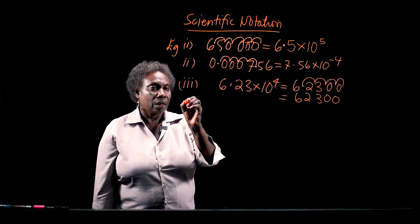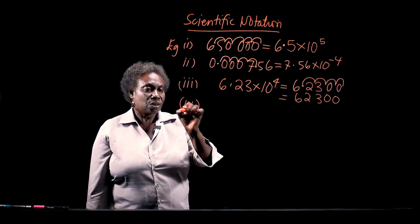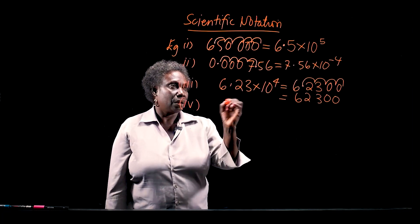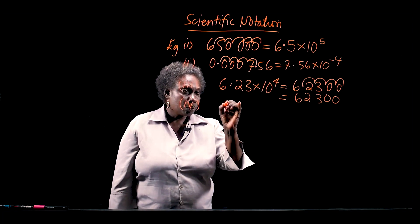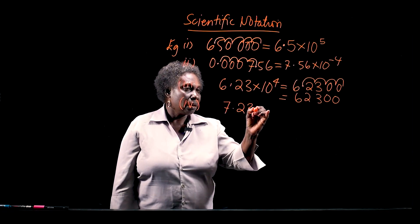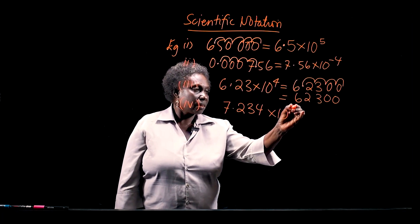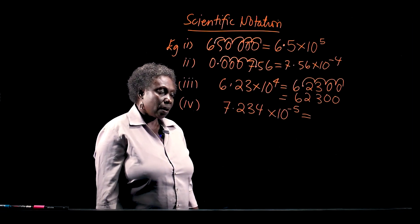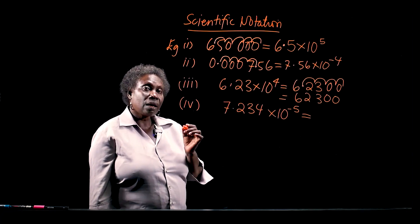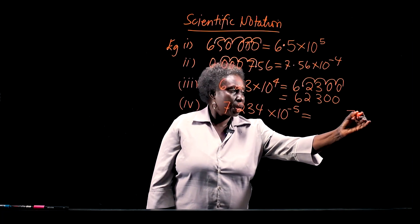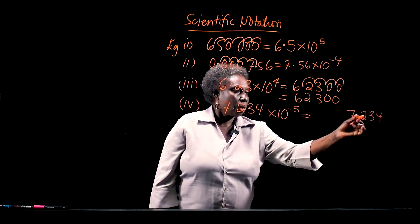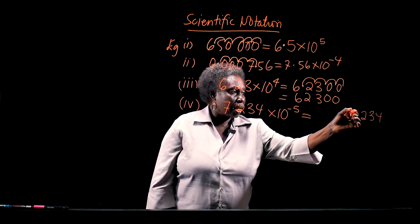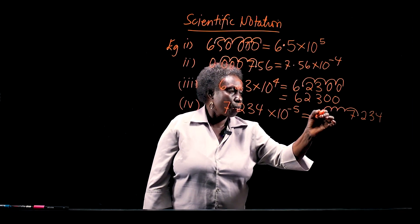Now let's look at a very tiny number which is in scientific notation, and I would like to change that to an ordinary number. If I have 7.234 times 10 to the power of negative 5, since the power of 10 is a negative power, I am going to move to the left. So I have 7.234, my decimal point is here, and I'll count the number of places to the left 5 times: 1, 2, 3, 4, 5.